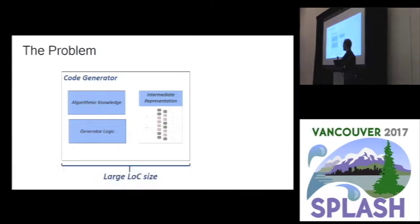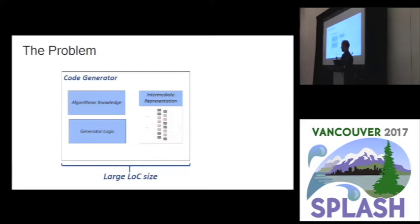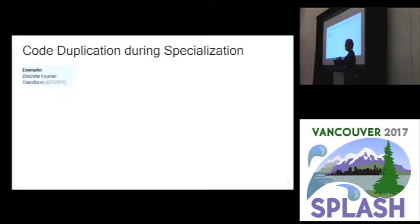The problem we are trying to solve is that, in our experience, code generators tend to be very large and they tend to become very large. This is partially due to bad programming practice that happens in the field of high-performance computation — people just have ad hoc scripts and so on. One could solve it with standard software engineering techniques, but there's also a particular code duplication that happens only in this field, which I want to illustrate on our case study: the discrete Fourier transform, or more concretely, an algorithm of the DFT — the FFT, the fast Fourier transform.